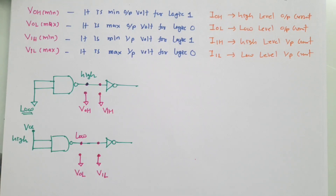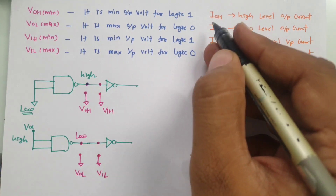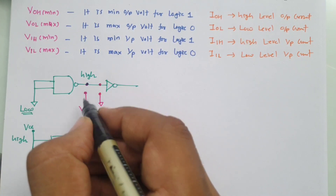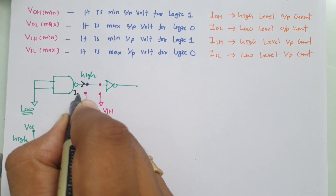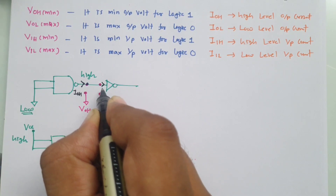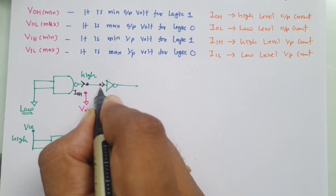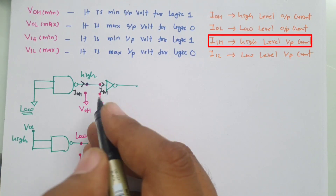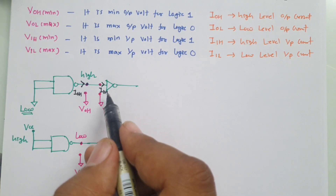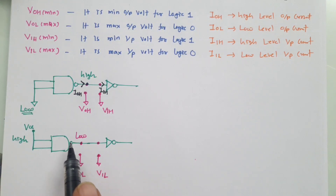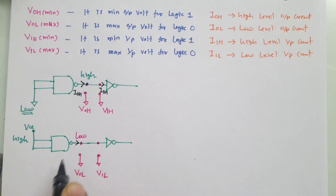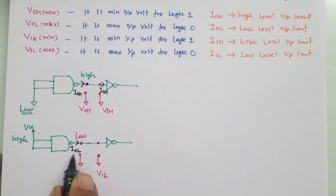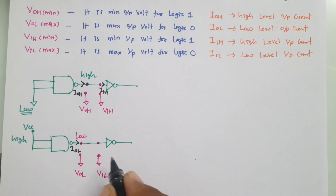Similarly, to understand current: for this particular case, the current at the output side is IOH. Then the input current to the NOT gate has to be IIH, and only then can this gate be driven properly. With the second condition, the output current is IOL, and over here it has to be IIH.